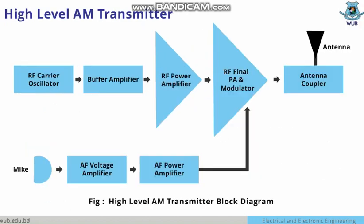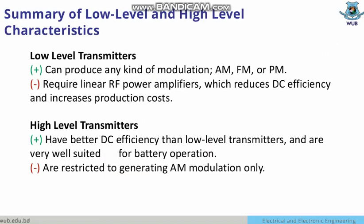Here there are two power amplifiers: an RF power amplifier and an AF power amplifier. That is the key difference between the two. Otherwise all the other components are quite the same. The summary of low-level and high-level characteristics: low-level transmitters can produce any kind of modulation — AM, FM, or PM.